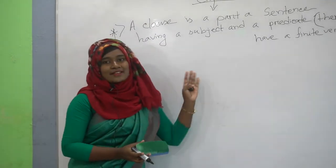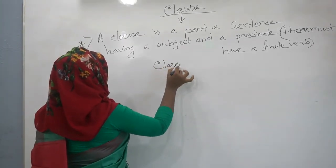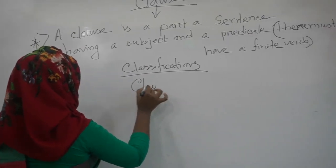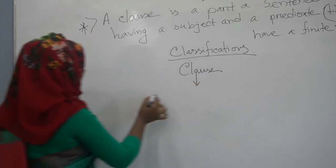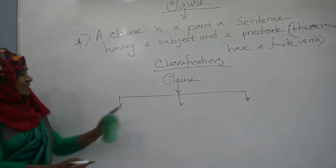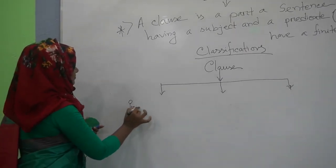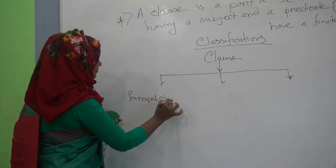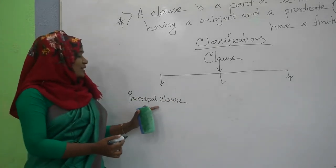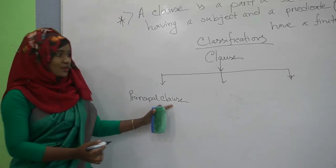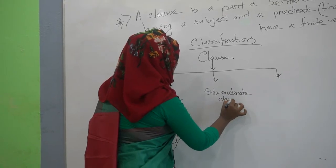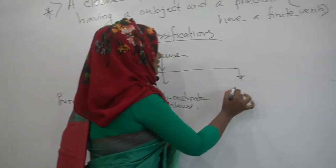Then we will learn the classification of clauses. Clauses are three types. The first type is Principal Clauses — you may also call them Independent Clauses or Main Clauses. The second is Subordinate Clauses, and the third classification is Coordinate Clauses.